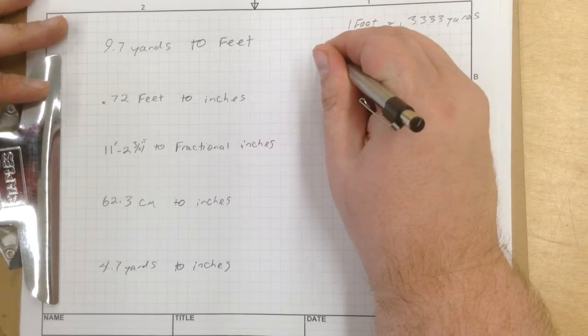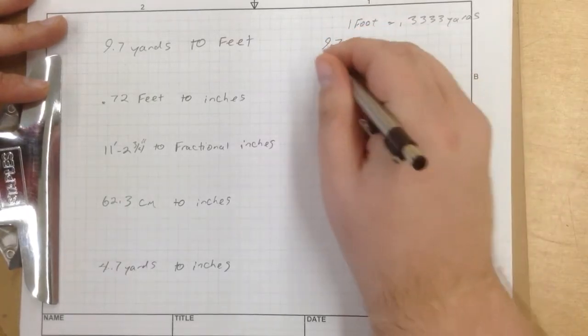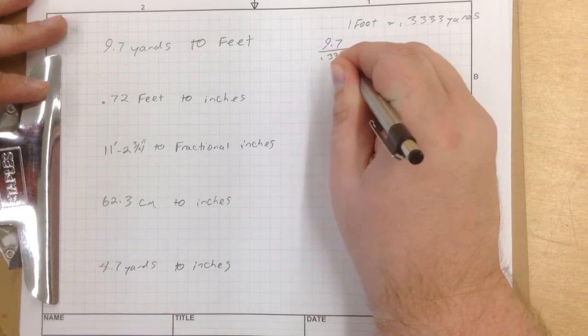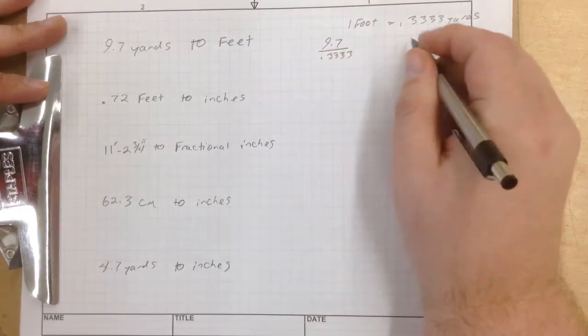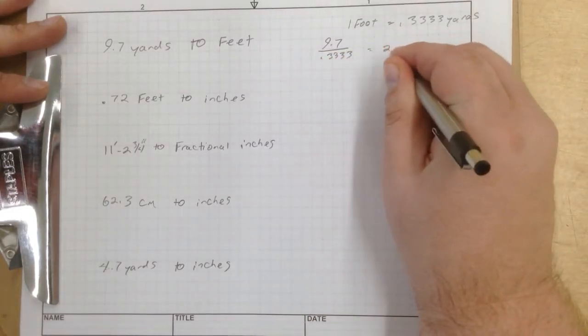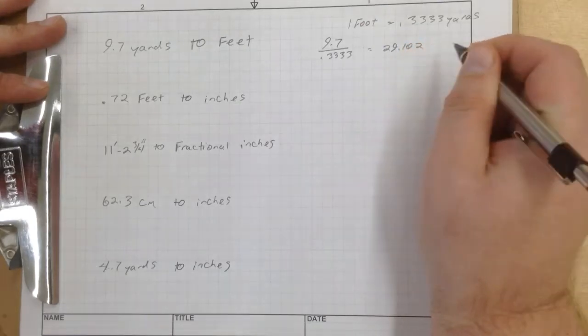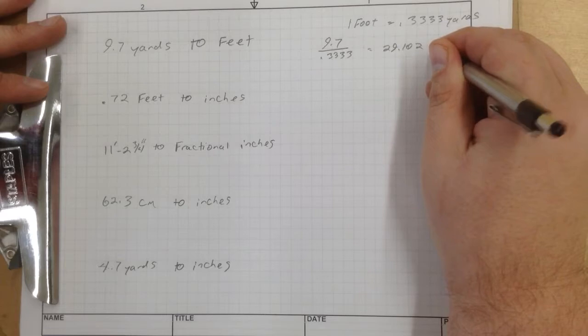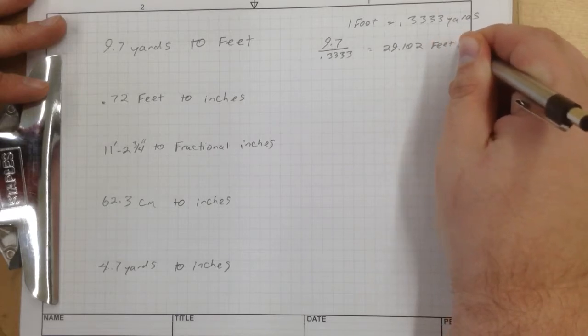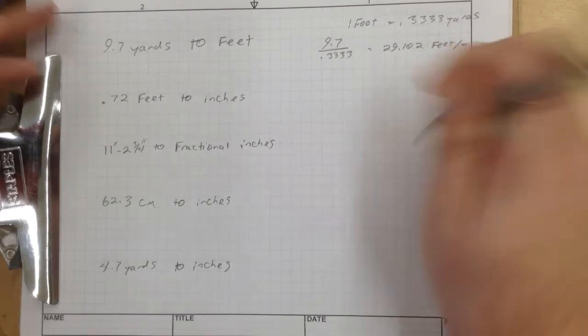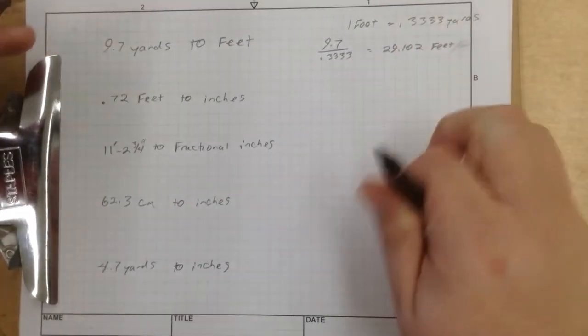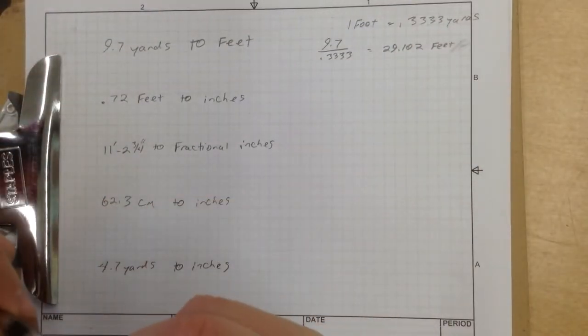You're going to take 9.7 right there, and you are going to divide it by 0.3333, and that is going to give you 29.102. So we know that there are 29.102 feet in this equation. Yeah, 29.102 feet in this.